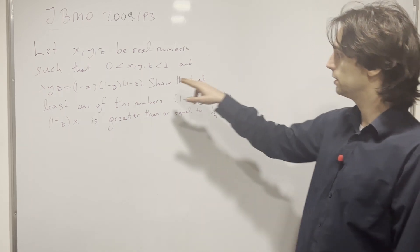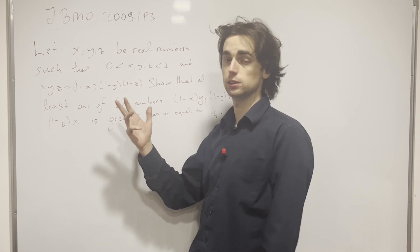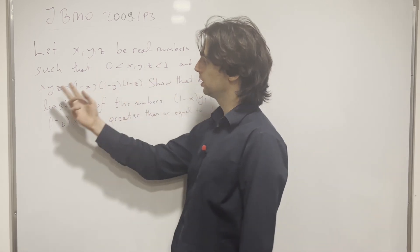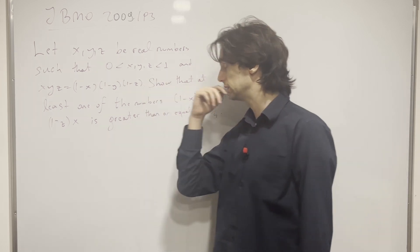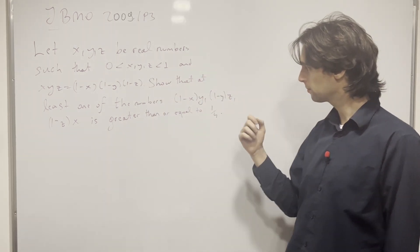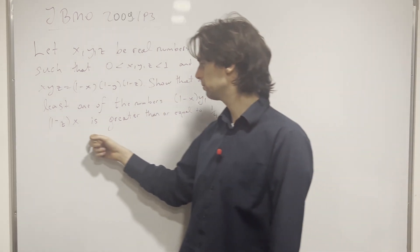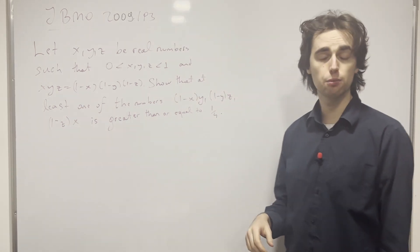So we have these numbers are between 0 and 1, so they're positive reals between 0 and 1. The product of x, y, and z is equal to the product of 1 minus each of these. And we're going to show that at least one of these numbers is greater than or equal to a fourth.